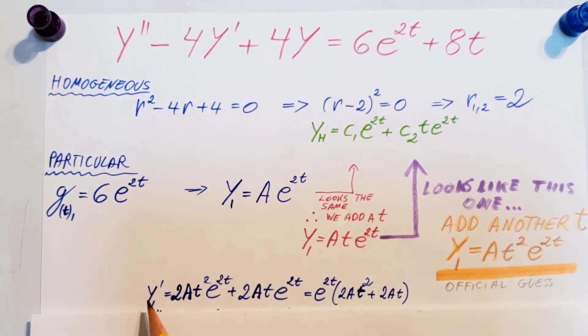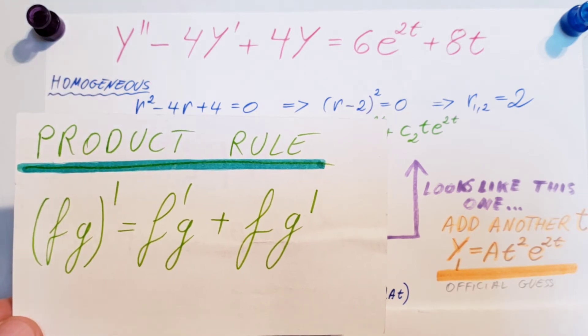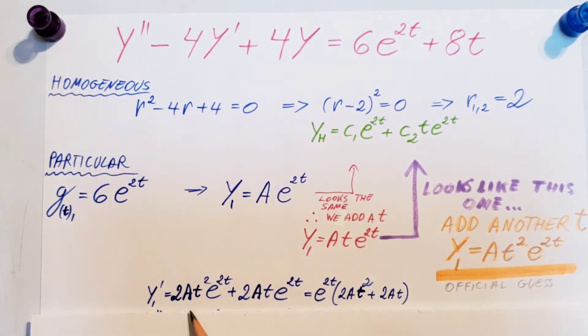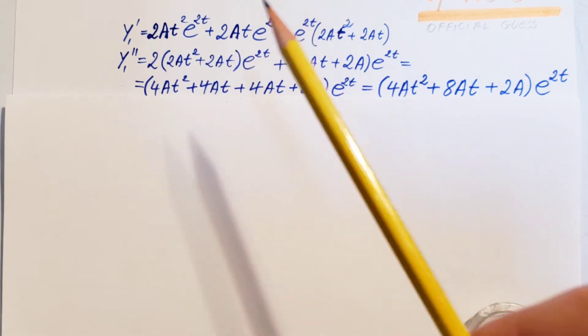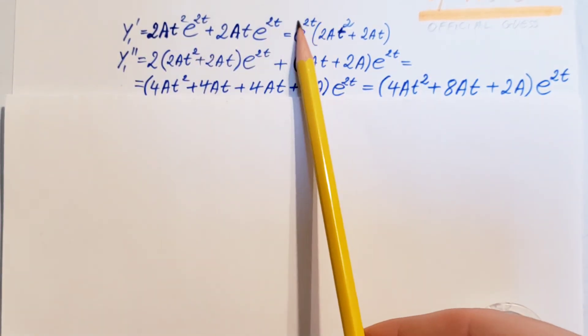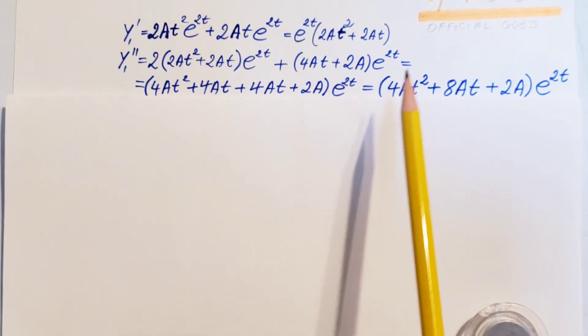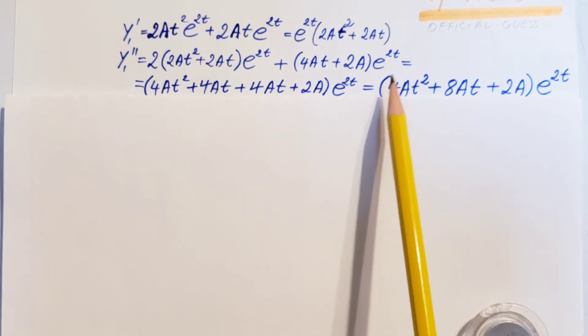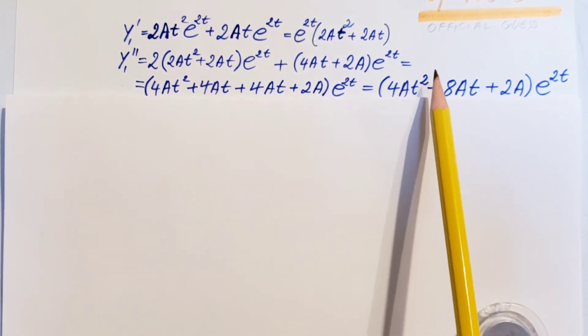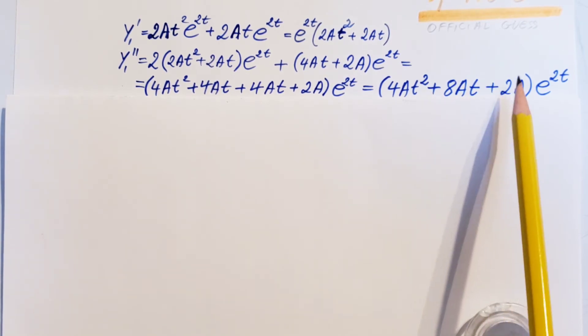Here is the first derivative, y1 prime. This is the product rule of these two. Here's a quick reminder if you forgot how it looks. And there it is. We finally get e to the power of 2t times 2At squared plus 2At. Next step, another derivative of this guy right here. And after a long process, we're able to find e to the 2t times this parenthesis, which is 4At squared plus 8At plus 2A.